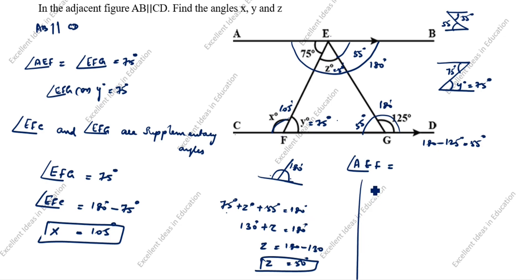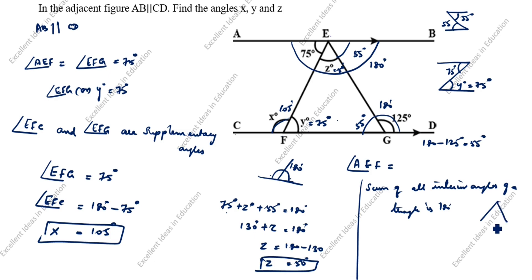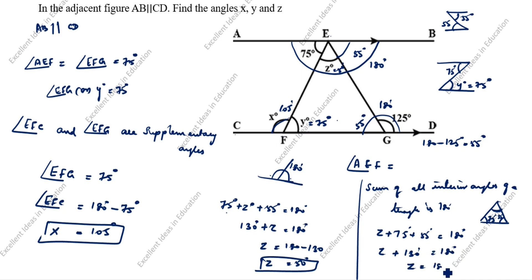Alternatively, we can use the triangle method. The sum of all interior angles of a triangle is 180 degrees. We know one angle is 75 degrees and another is 55 degrees. So Z plus 75 plus 55 equals 180 degrees. Z plus 130 degrees equals 180 degrees. Therefore Z equals 180 minus 130, so Z equals 50 degrees. Both methods give the same Z value of 50 degrees, but the concepts are different — you can follow whichever is easiest for you.